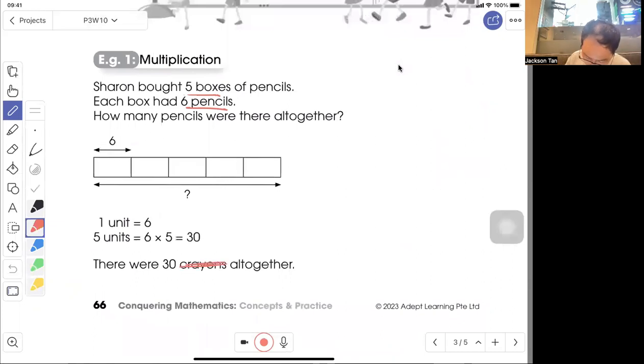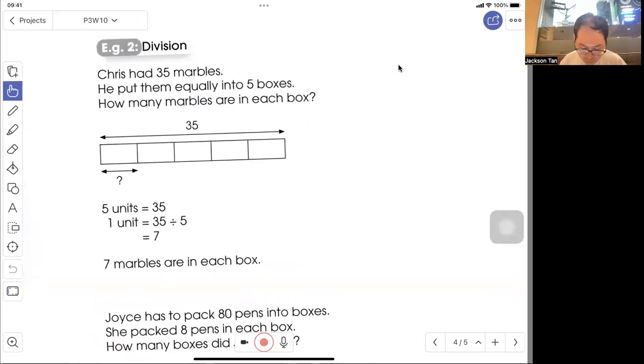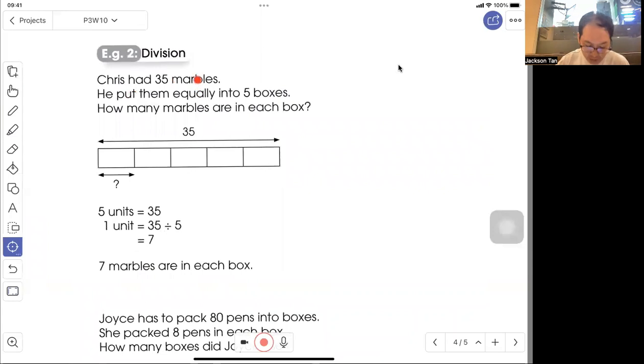So here's a typo, change it to pencil. Example two. These have thirty-five marbles. They put them equally into five boxes. How many marbles are in each box?